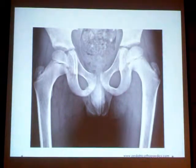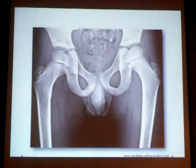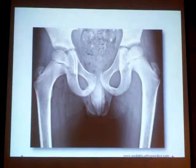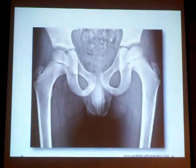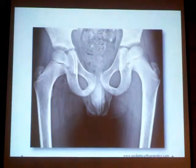This is the x-ray of the child — there are some abnormal findings here. If anyone can observe any abnormality in this x-ray: the right femur is osteopenic compared to the left one, and even the cortex on the right side is thinner than the cortex on the left side.